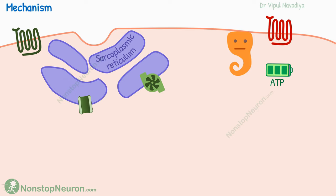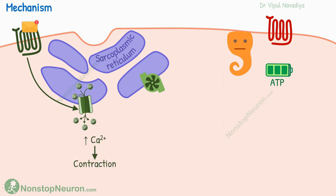Apart from these, smooth muscles can also be controlled without changes in membrane potential. In a certain case, the receptor activates a pathway that causes the release of calcium from the cell's internal store in the sarcoplasmic reticulum. This increases calcium concentration in the cytoplasm, triggering contraction.